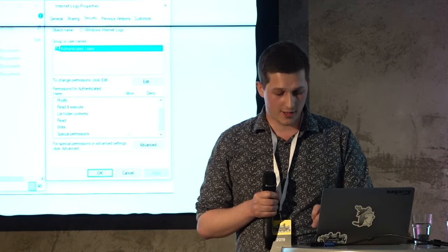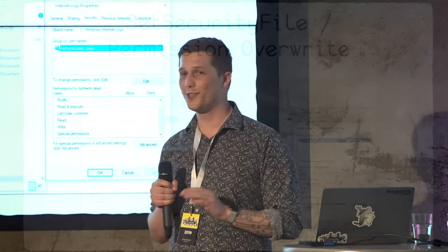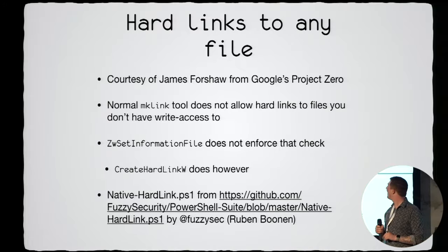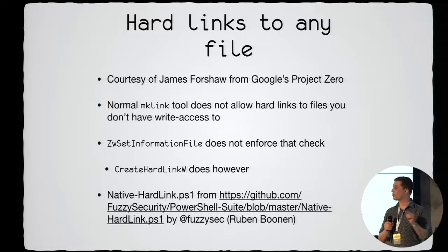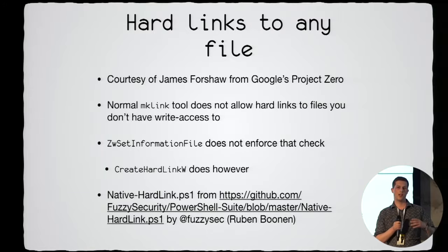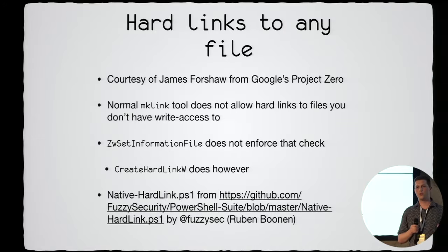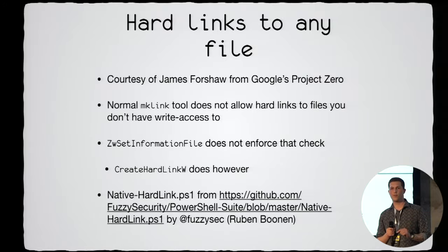Windows's default command line tool MK link does not let you create a hard link to a file you don't have write access to. But if you go deep into the Windows APIs, you can still do this. James Farshaw from Google's Project Zero figured out that the NtSetInformationFile API that CreateHardLinkW uses doesn't enforce the write access check. So if you implement your own create hard link using NtSetInformationFile, you can create a hard link to any file on the system. In the case of Checkpoint, you can give yourself full control over any file on the system not owned by trusted installer.